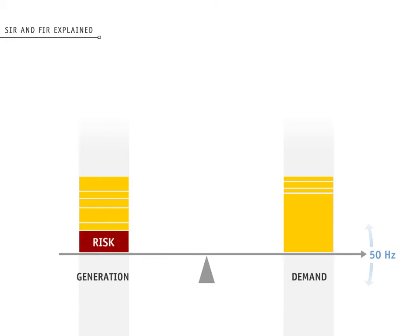The risk or risk setter is the single generator that's contributing the most power. The risk setter in either island can also be the HVDC link. For our purposes here, the HVDC is represented as a generator injecting power into the system. If we schedule enough reserve to cover the loss of the risk setter, then we will definitely have enough reserves to cover the sudden loss of any smaller generator.